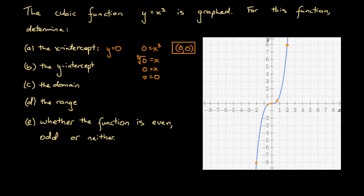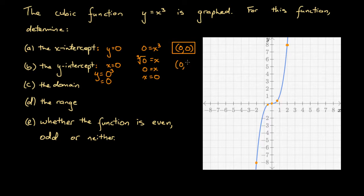What about the y-intercept? The y-intercept is the point at which the graph crosses the y-axis, associated with x equals 0. Substituting x equals 0 into the equation gives y equals 0 cubed, and 0 times 0 times 0 is just 0, so y equals 0. The only point where the graph crosses the y-axis is the same as where it crosses the x-axis — the origin — so the point (0, 0) is also the y-intercept.